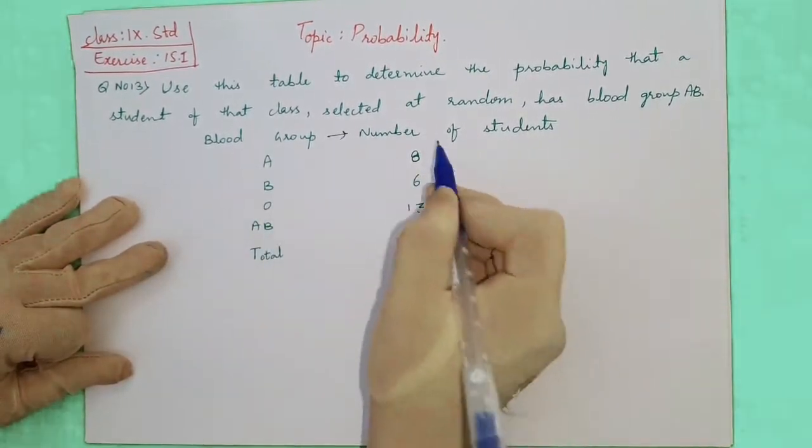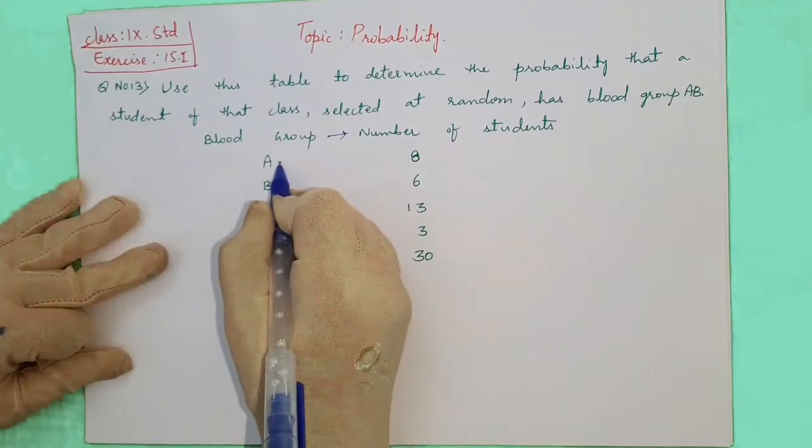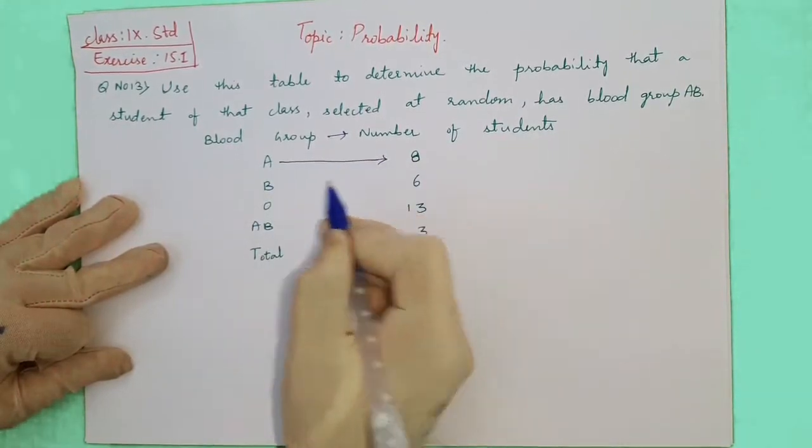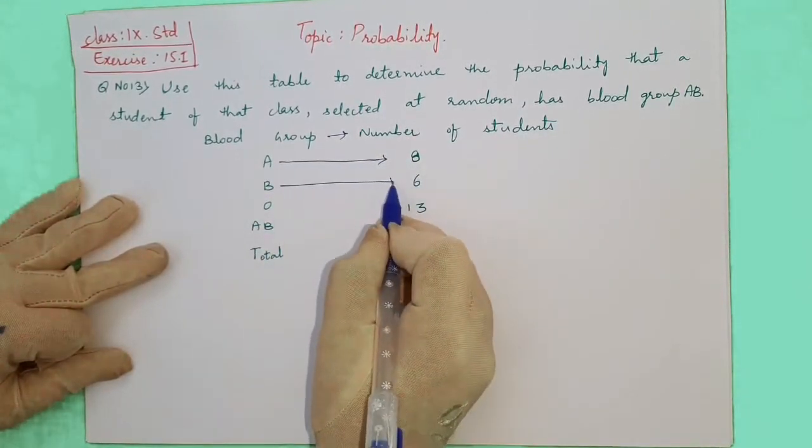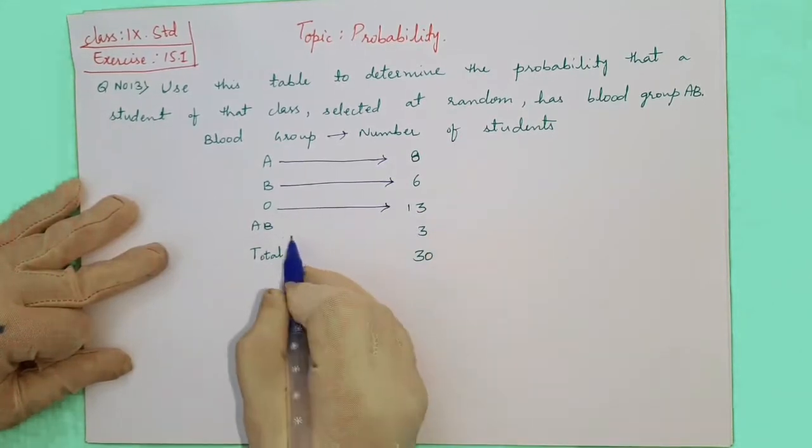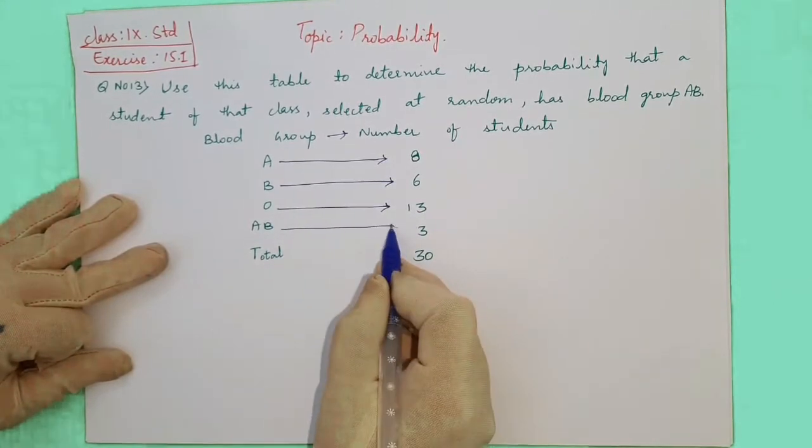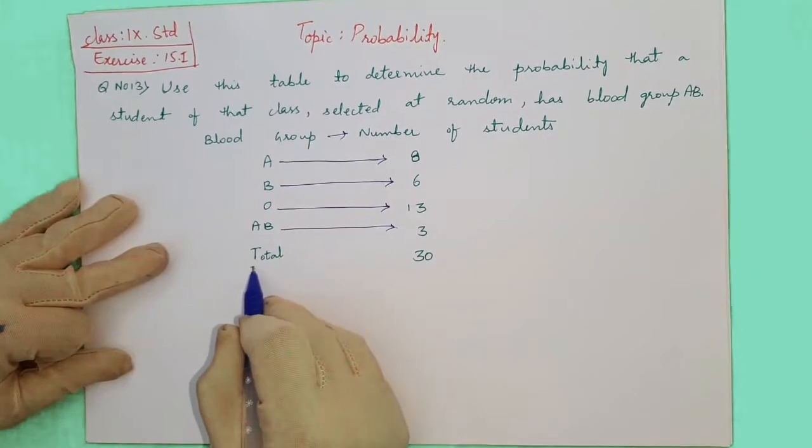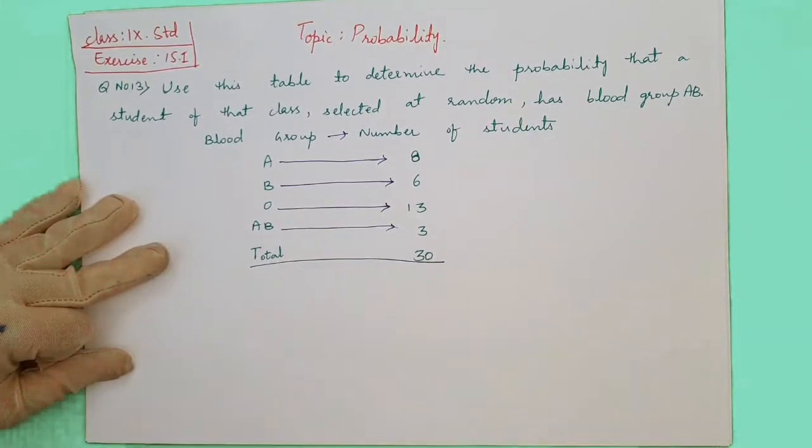So the blood groups are given and the number of students are given. For blood group A, it is 8. For B, 6 students are there. For O, 13. And for AB, it is 3. And the total number of students are given here as 30.